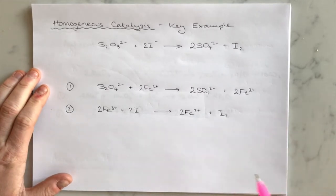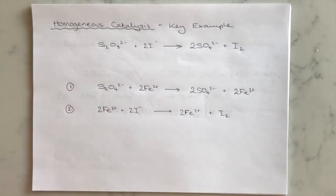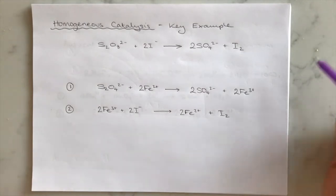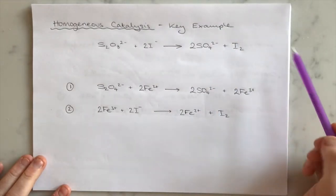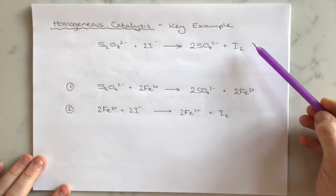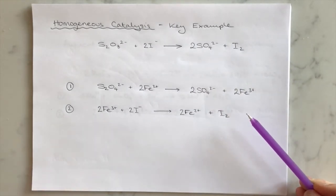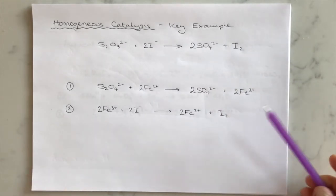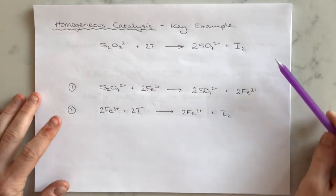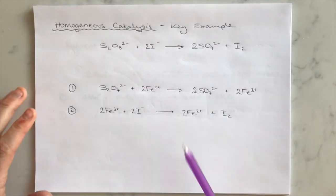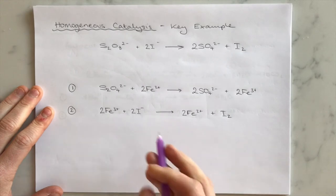In this topic, there are two key examples of homogeneous catalysis that you just need to know. It is one of those topics where you essentially have to commit some key equations to memory. These are the same ones which are in your notepack, but sometimes it just helps to have a tailored explanation of each of them.